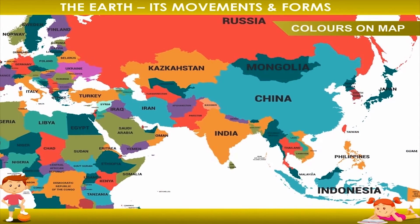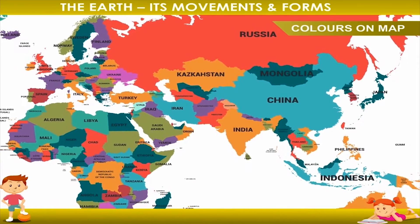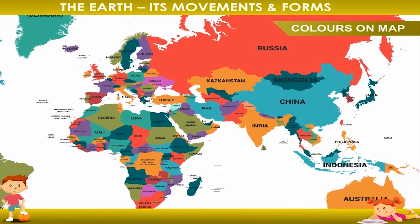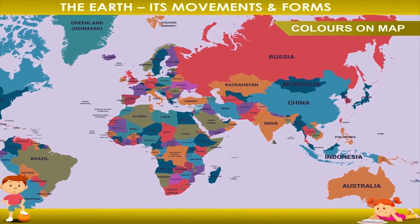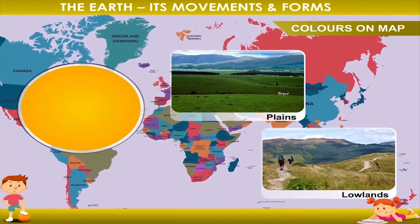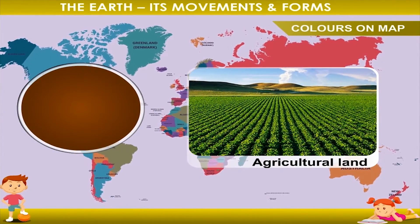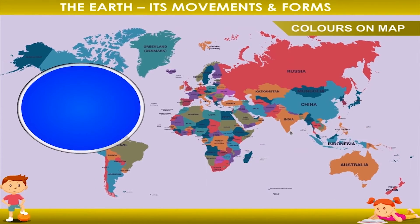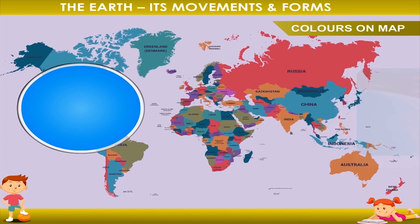Colors on Map: Maps show a variety of places, so different colors are used to show various things. Green color is used to show plains and lowlands. Yellow color denotes agricultural land. Brown color is used to show hills and mountains. Blue color is used to show water bodies, and light blue color is used to show shallow waters.